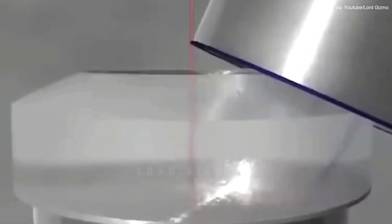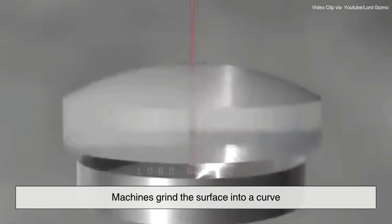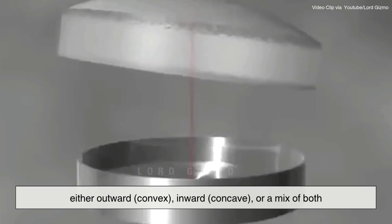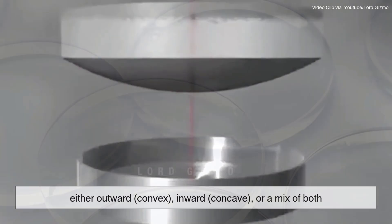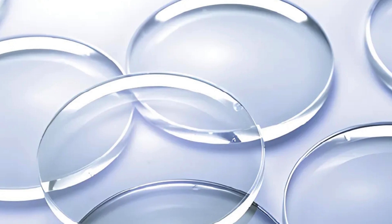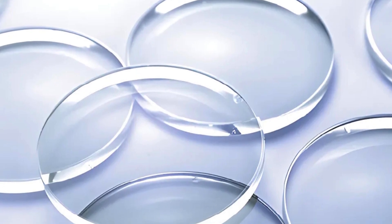Now it's time to shape the blank. Machines grind the surface into a curve, either outward convex, inward concave, or a mix of both. This curved shape is what makes a lens bend light in just the right way.